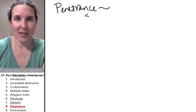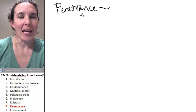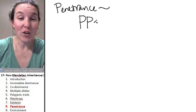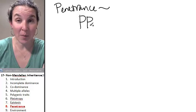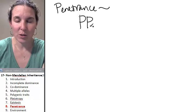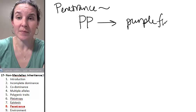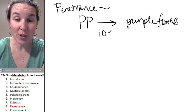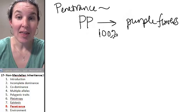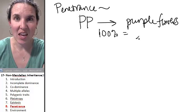Let's go back to pea plants for an easy, accurate example. In pea plants, if you have a homozygous dominant genotype, then you're going to make purple flowers. If this happens 100% of the time, then the penetrance equals 100%.